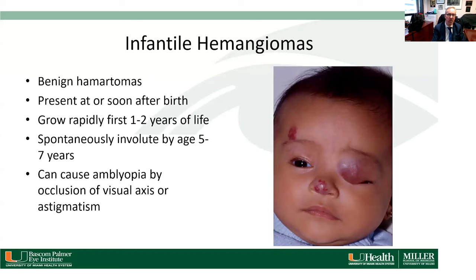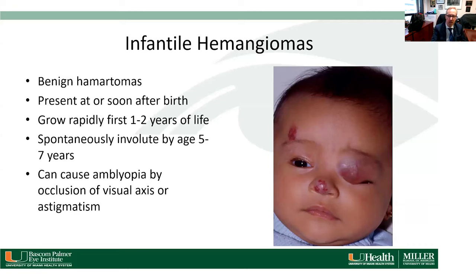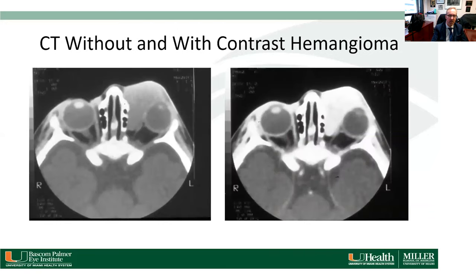Other conditions that can be confused with rhabdomyosarcoma include infantile hemangiomas — benign vascular tumors composed of tissue normally found at the involved site. They grow rapidly during the first one to two years of life and then spontaneously involute over the next five to seven years. They can cause amblyopia by occlusion of the visual axis or induction of astigmatism. This child has multiple hemangiomas, including one large lid and orbital mass.